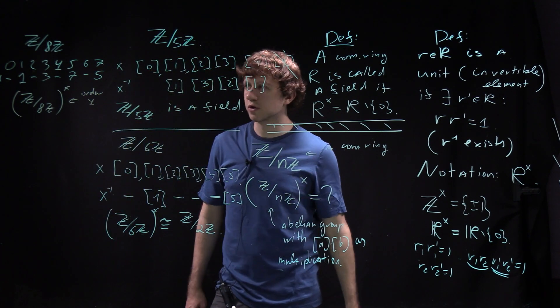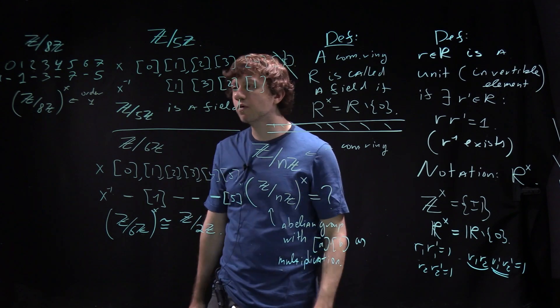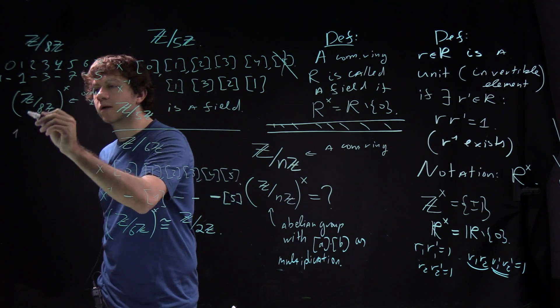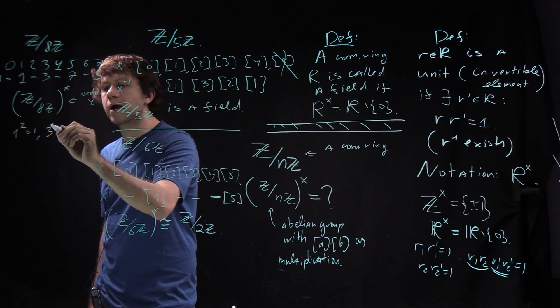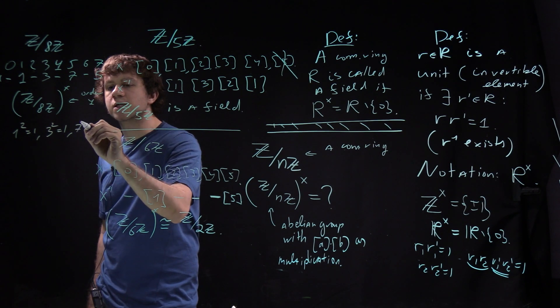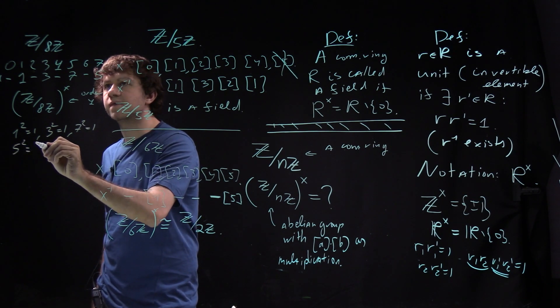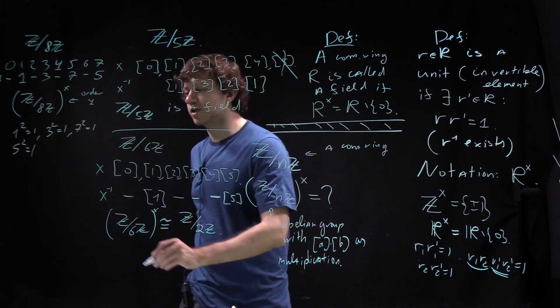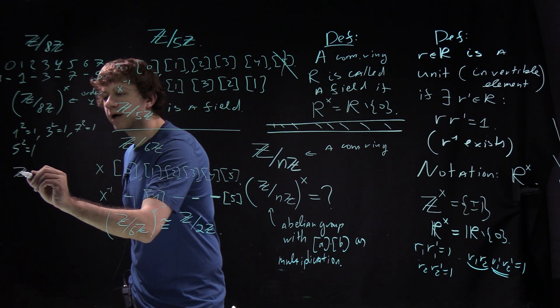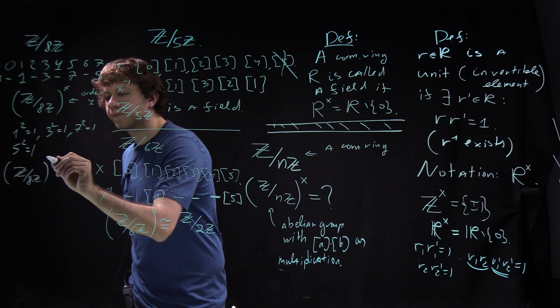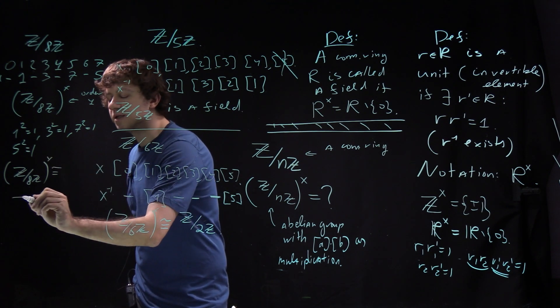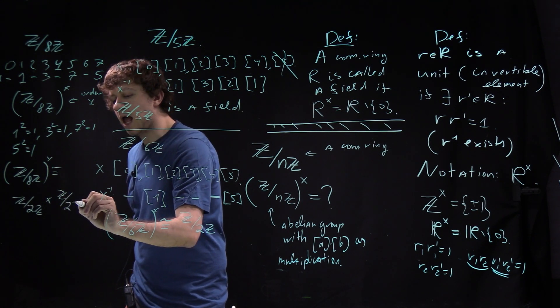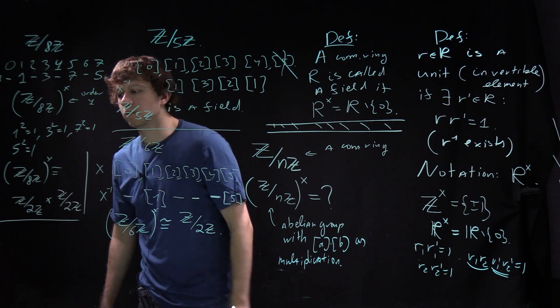There are two abelian groups of order 4: Z over 2Z times Z over 2Z or Z over 4Z. We can look at squares. 1 squared is 1, 3 squared is 1, 7 squared is 1, 5 squared is 1. All of them square to 1, so Z over 8Z multiplicative group is isomorphic to Z over 2Z times Z over 2Z. This is a beautiful example.